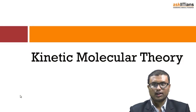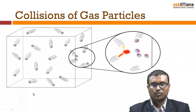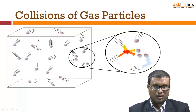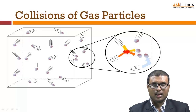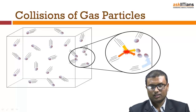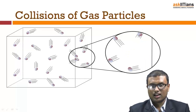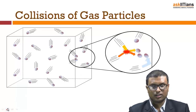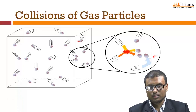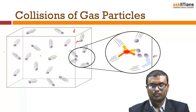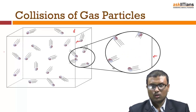In this animation you can see a container with gas molecules inside. These gas molecules always collide with the container walls. Since this is a cube, there are six walls, and the gas molecules collide with all six walls of the container.